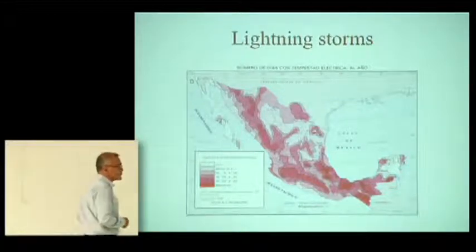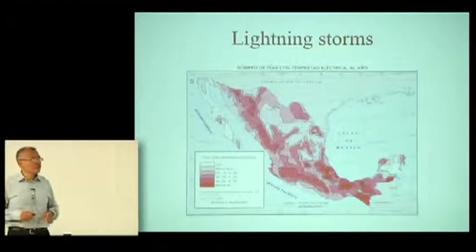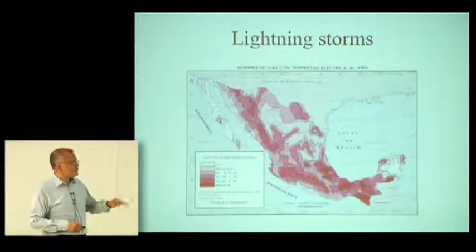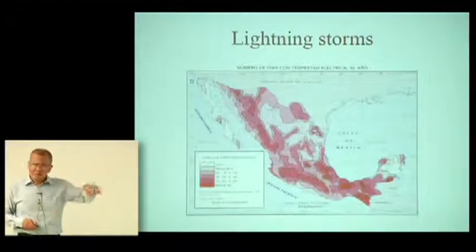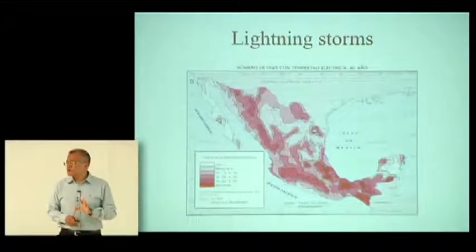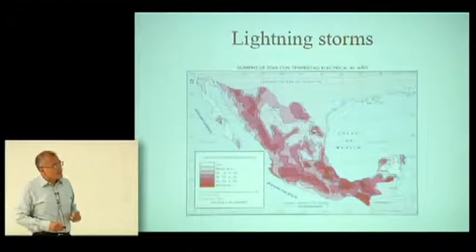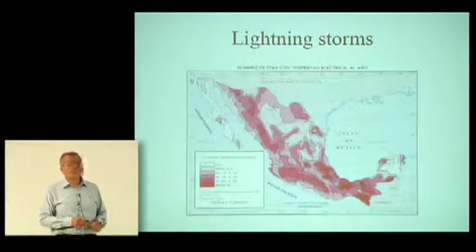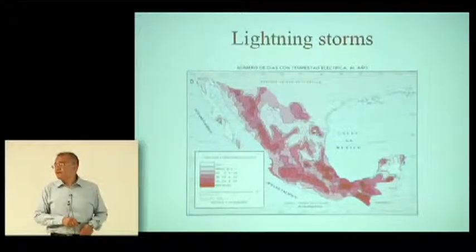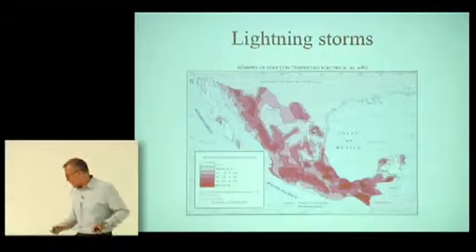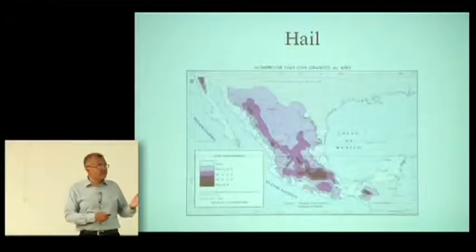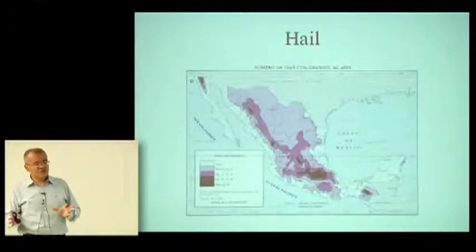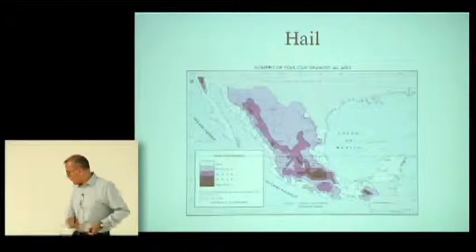Just to give you an idea of the climatology of storms in Mexico: this map shows lightning storms, with measurements of the amounts of lightning hitting various areas. I want you to look at the relative values — you see a strong correlation between the topography and the occurrence of these storms. Here we have the Sierra Madre Occidental and this is the Trans-Mexican Volcanic Belt, where the highest amount of lightning occurs. The same for hail: the highest amounts are in these mountainous regions of Mexico.